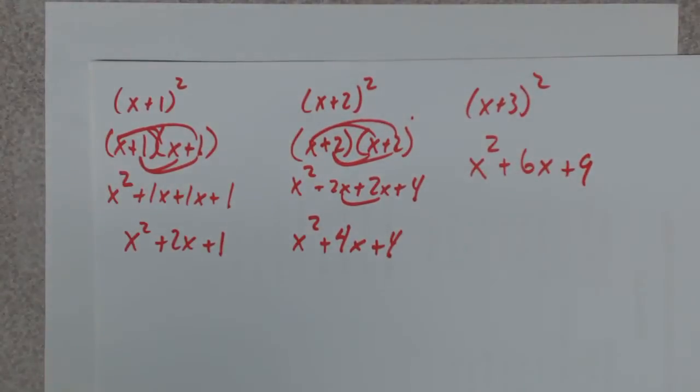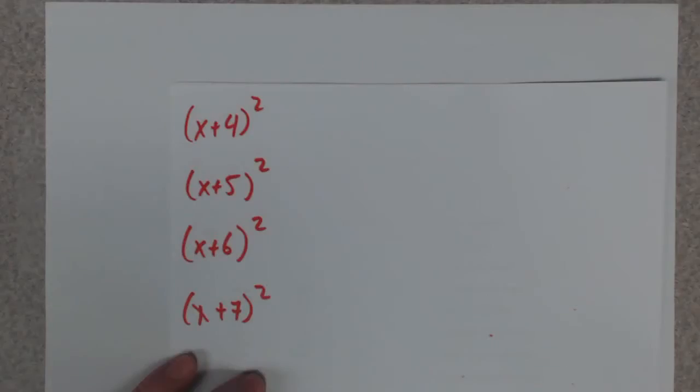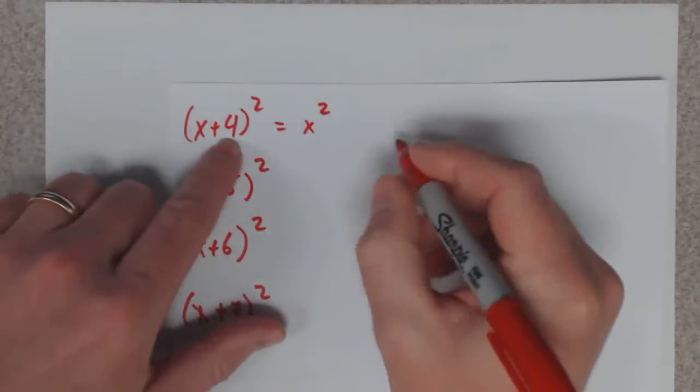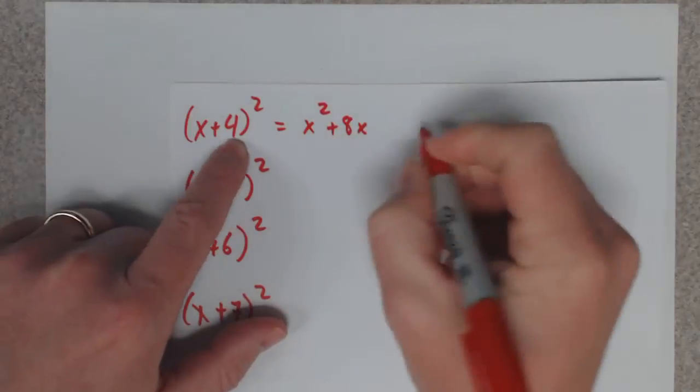So we can do these really quickly now. It's pretty neat. So let's do these real quick then. Automatically x squared, double it, square it.